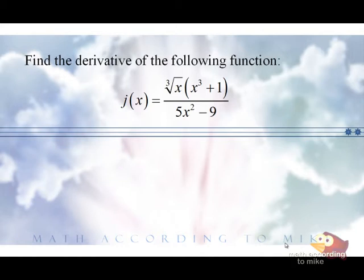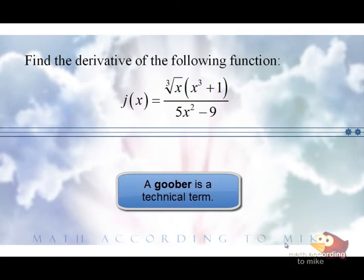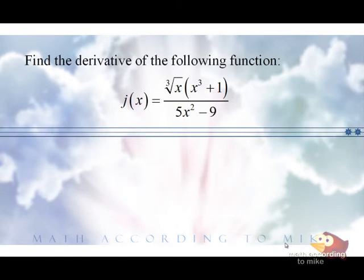All right, so now this one is how you would say a goober because we have ourselves a quotient rule, and within that quotient rule, we have a product rule.